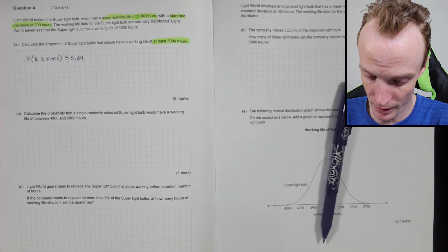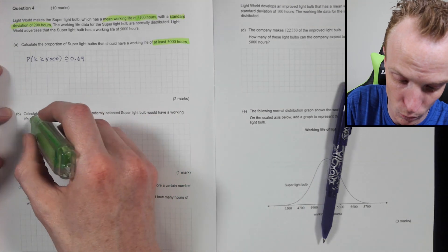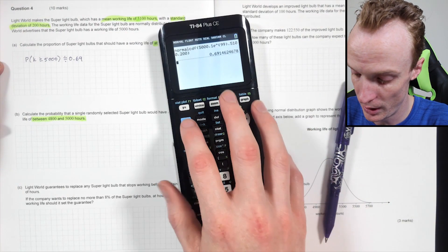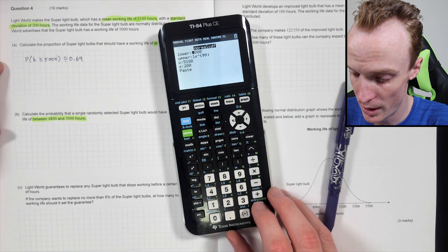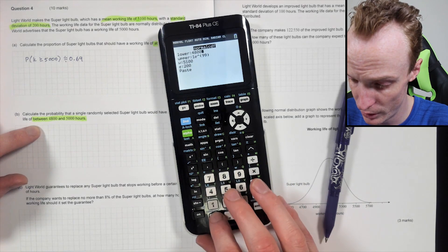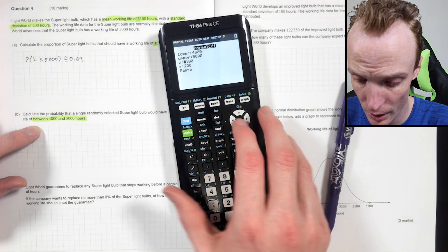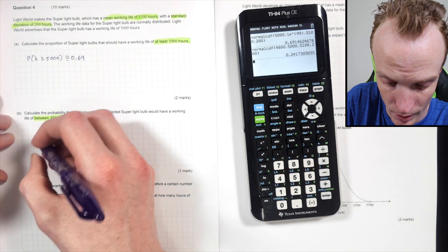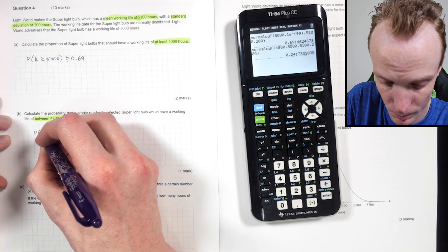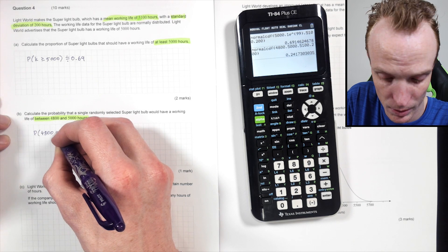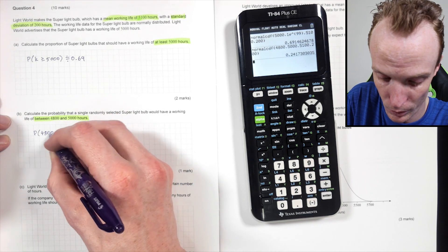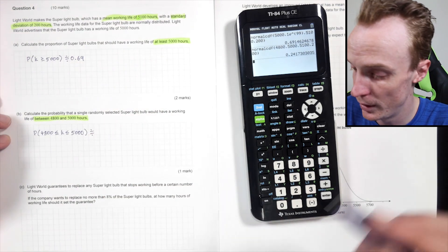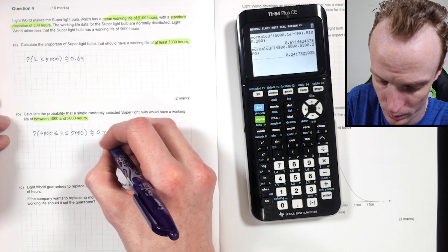Calculate the probability that a single randomly selected Super Light Bulb has a working life between 4800 and 5000 hours. That's once again a normal CDF calculation — normal CDF with lower 4800, upper 5000, same mean and standard deviation. That gives approximately 0.24, so the probability that K is between 4800 and 5000 is approximately 0.24.